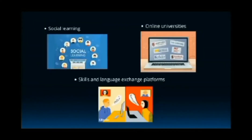Next is social learning. In psychological theory, social learning refers to learning behavior that is controlled by environmental influences rather than by innate or internal forces.